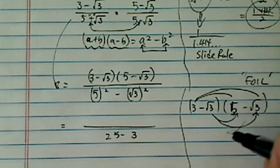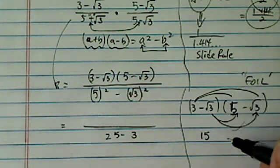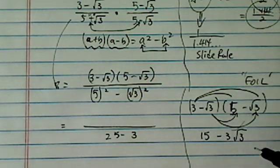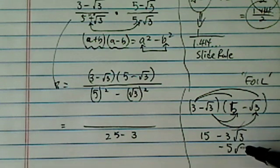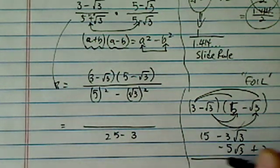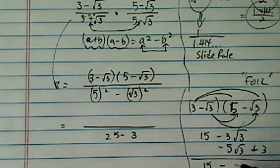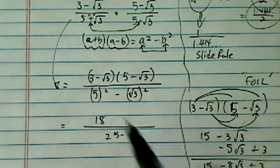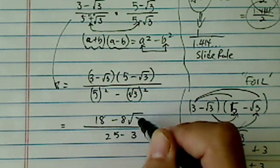Hat, underbelly. Alright, so what we're going to do is 15 minus 3 radical 3, minus 5 radical 3, and then plus 3. Added together, I have 15 minus 8 radical 3 plus 3. So I have 18 minus 8 radical 3.